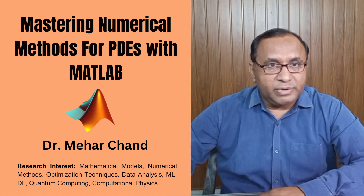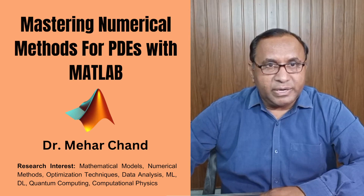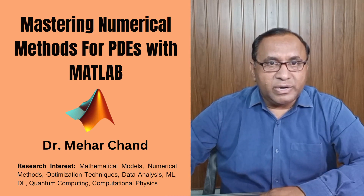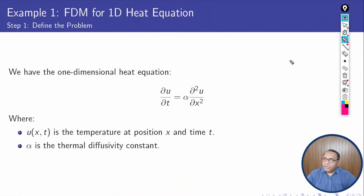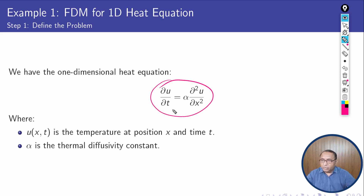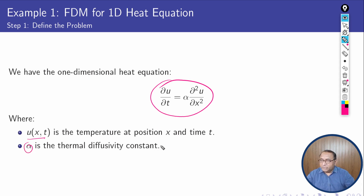We will be diving into the practical realm by discussing the implementation of the finite difference method for solving the one-dimensional heat equation using MATLAB. The equation is defined as ∂u/∂t = α · ∂²u/∂x², where u(x,t) is the temperature at position x and time t, and α is the thermal diffusivity constant.